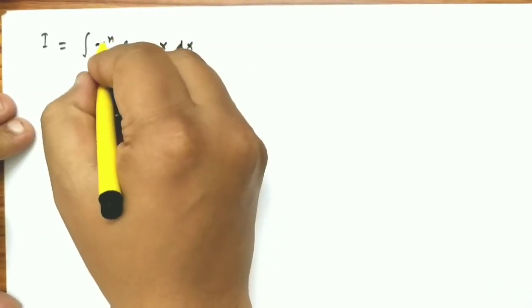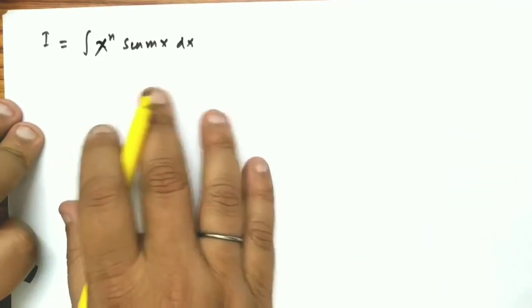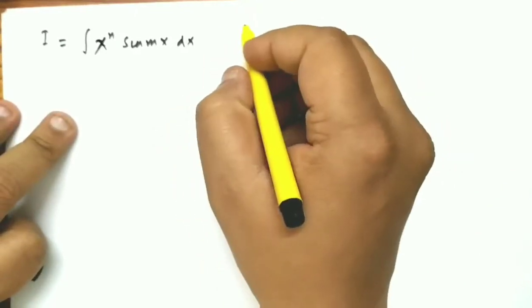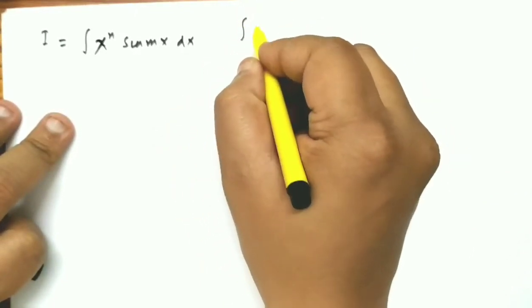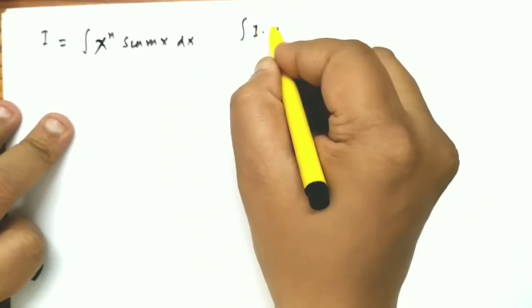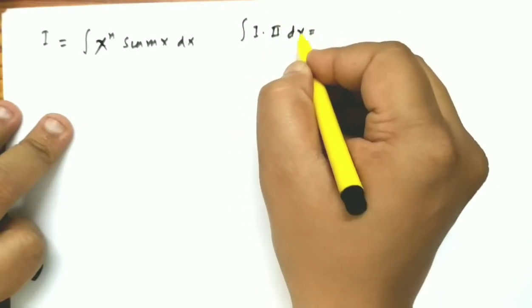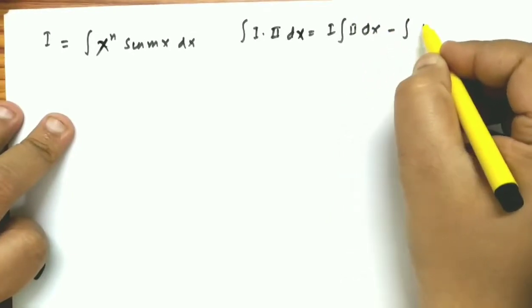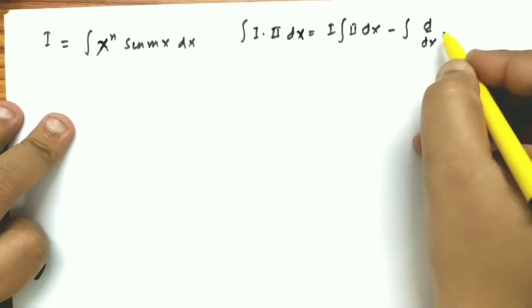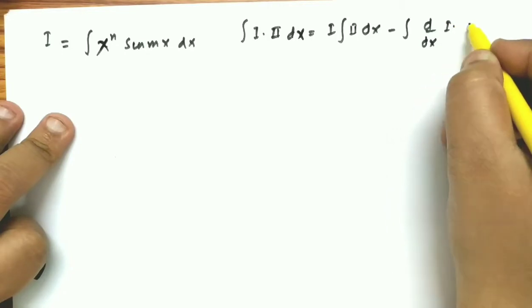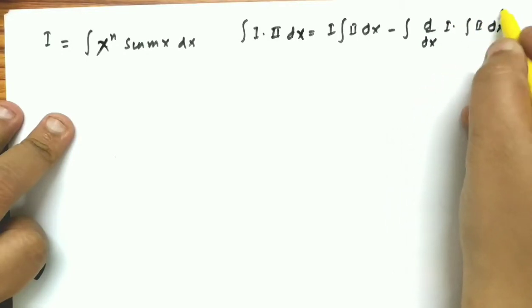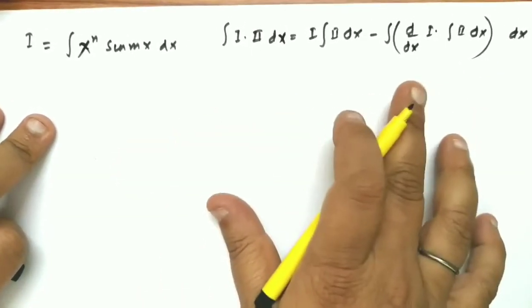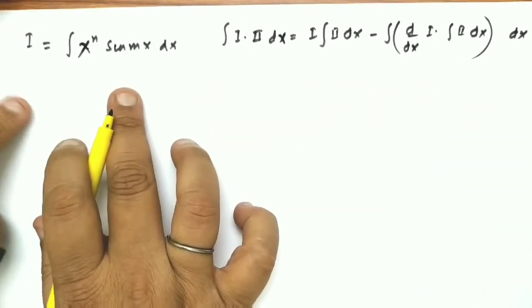I will apply integration by parts. The formula for integration by parts — there are two functions: first into second function dx equals first times integral of second dx, minus integral of differentiation of first function into integral of second dx, whole dx. I will use this formula to evaluate this integral.